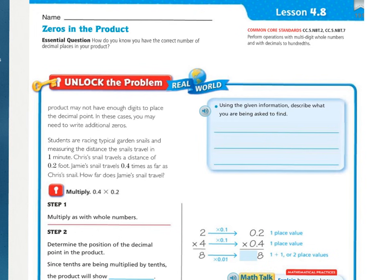Today's lesson is all about making sure that you have the correct number of decimal places in your product. Remember, the product is the answer to a multiplication problem. Sometimes your product may not have enough digits to place the decimal point. In these cases, you may need to write additional zeros.